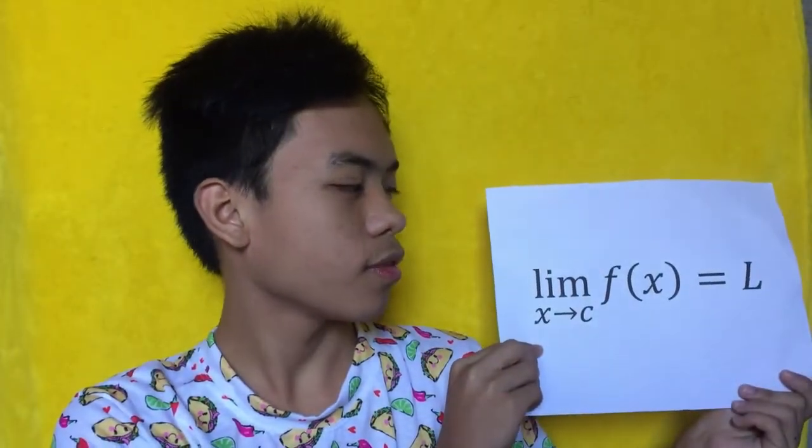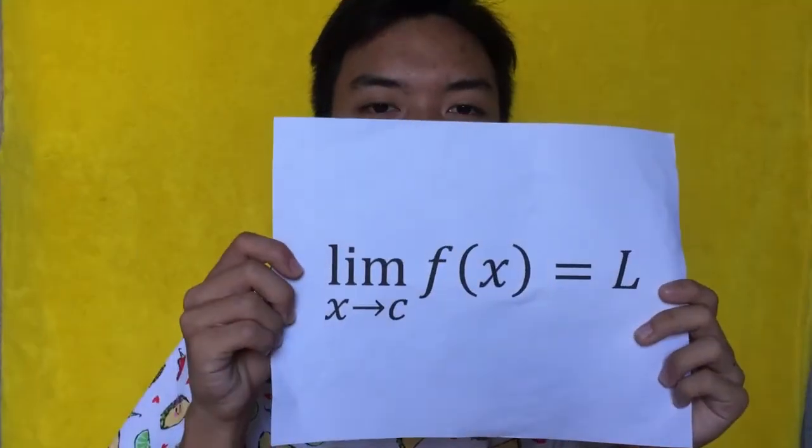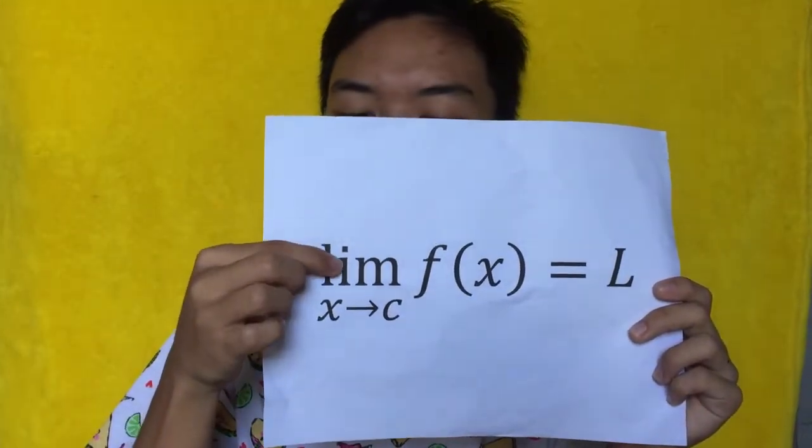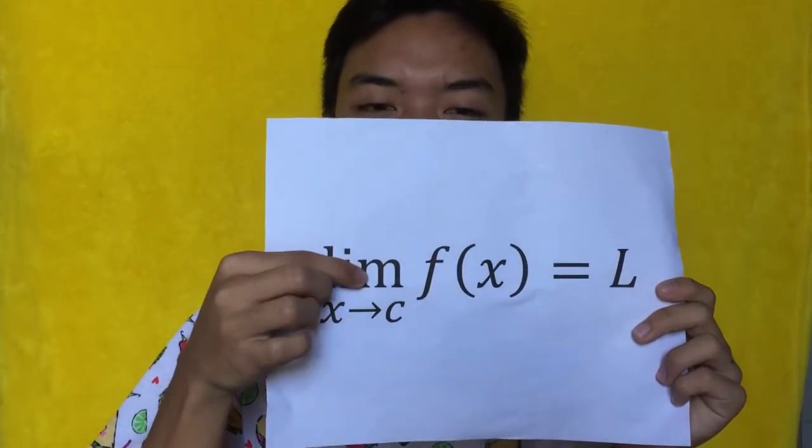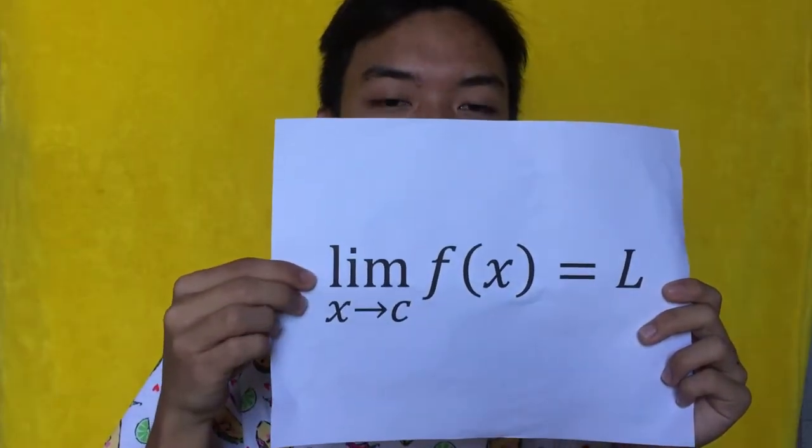So what is a limit? A limit is a boundary that may be reached or not, or possibly exceeded. To start off, I will show you the notation involved with this concept. Here we have the letters L, I, M referring to limit.